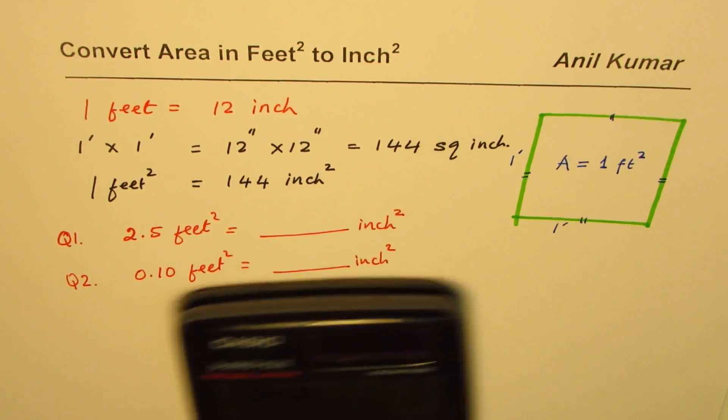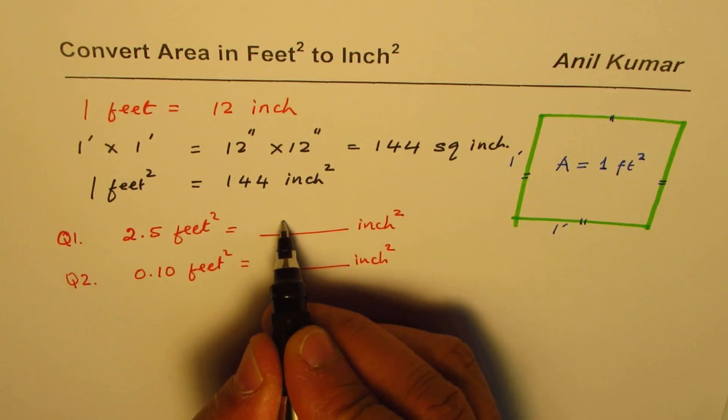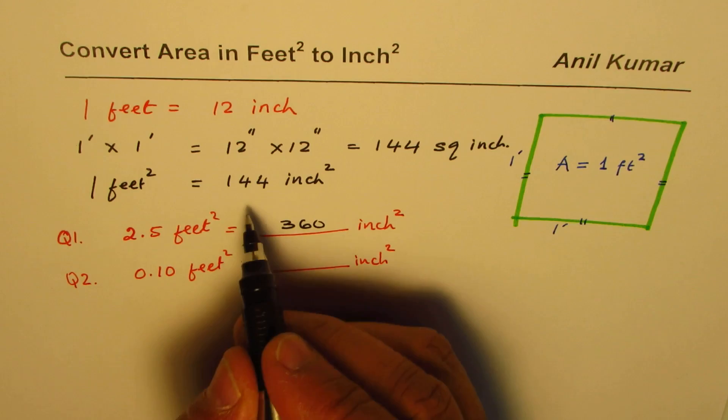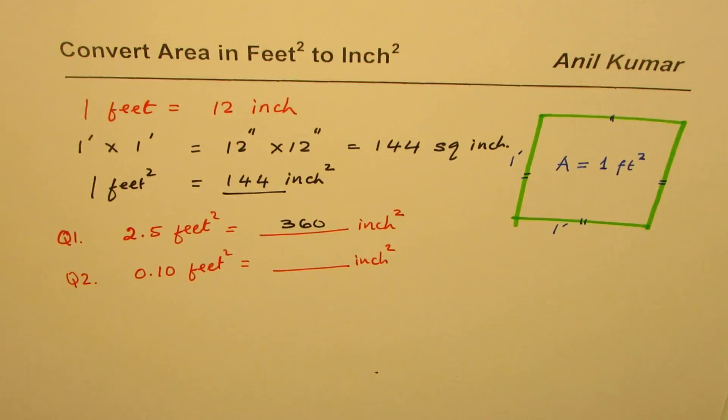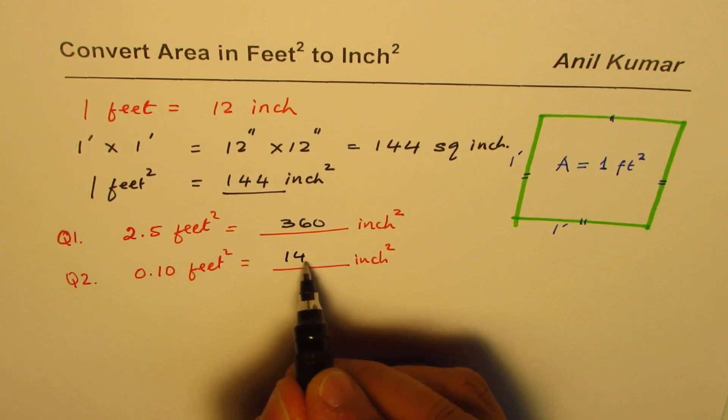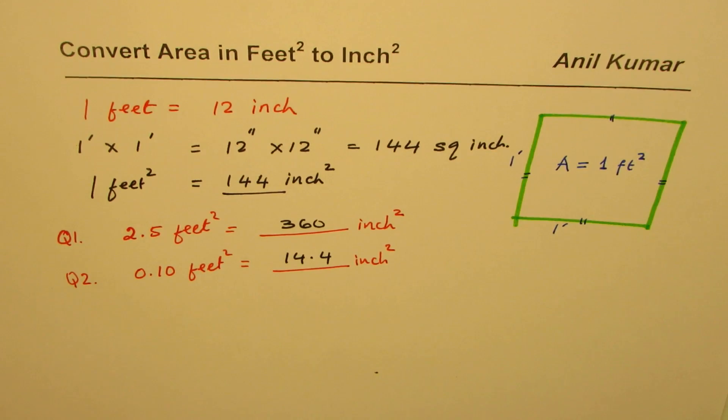We multiply by 144. For the second question, when you multiply 0.10 by 144, you get 14.4 square inches.